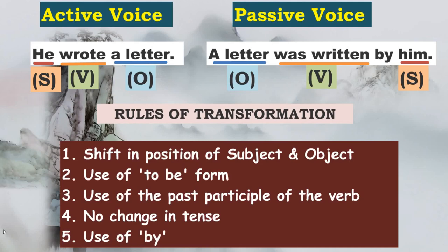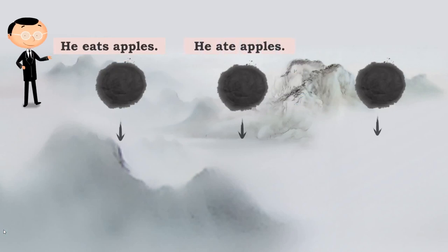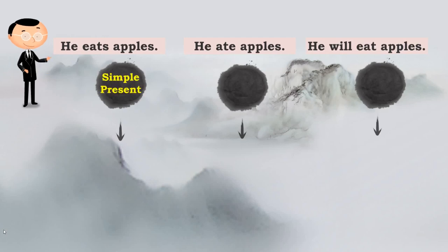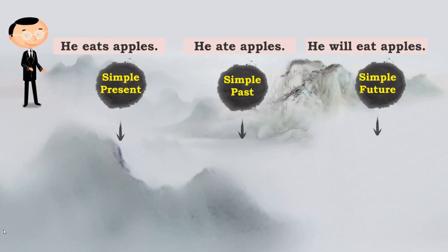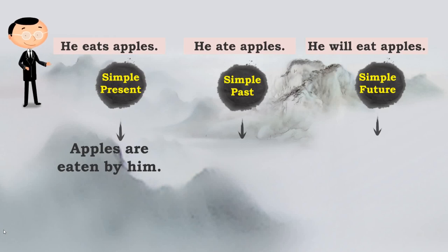The 'by' may or may not be used. Now, if we have understood the rules of transformation, let us see certain transformations. The first sentence: 'He eats apples' — simple present. If we apply the rules, the passive is 'Apples are eaten by him.' Here, 'eaten' is the past participle, but 'are' is the present tense. Why 'are'? Because it is 'eats' in the simple present, so you have to retain the tense. First rule applied: there is a shift in the subject and the object — the subject has become 'him' and 'apples' has come first.